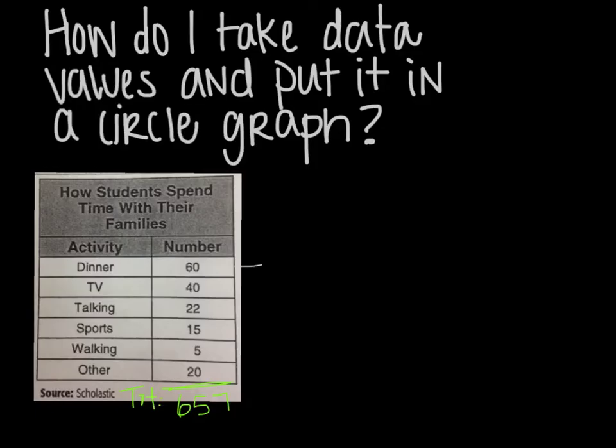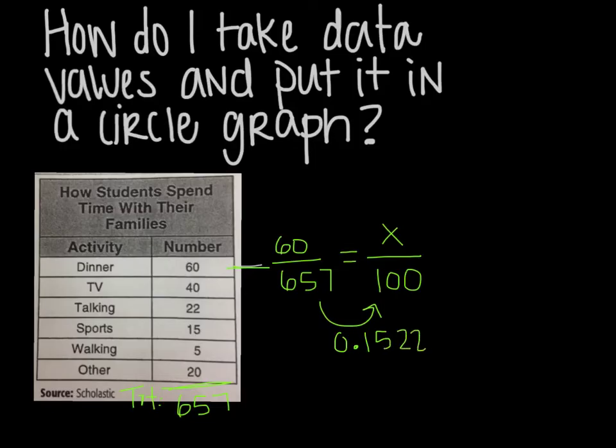So for dinner, my part is going to be 60 out of my whole 657. And that's where you're going to first convert it to a percent. Because we want to know what percent of the circle graph that is. So we're going to set it up like this. And then going from 657 to 100, you will take your 100 and divide it by 657. And then you're going to get an answer of 0.152207. And I'm actually multiplying that. And you can double check by taking your 657 and multiplying it by that number. And you should get the correct answer. So I'm going to start with what I know to what I don't know. I'm going to multiply the same thing.